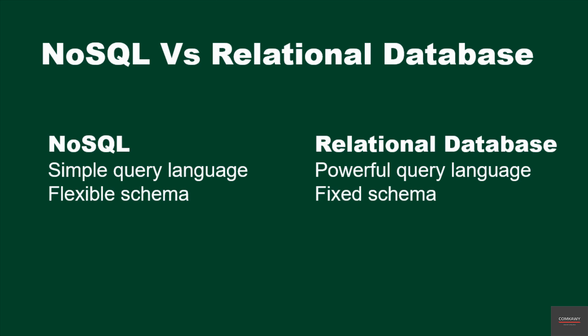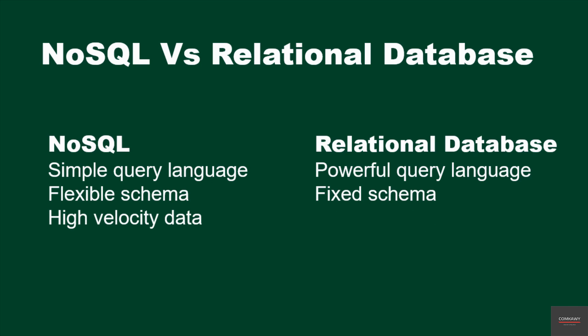NoSQL databases deal with high-velocity data, in comparison to relational databases that deal with low-velocity data. By velocity, I mean the speed at which the data is being processed.